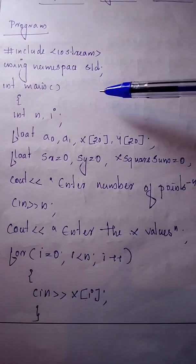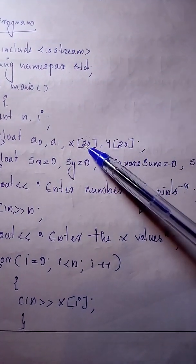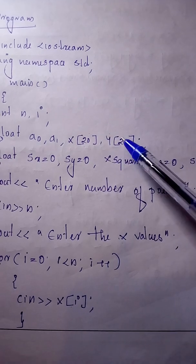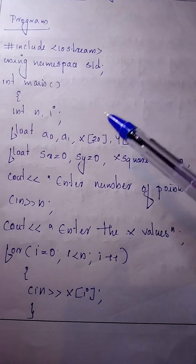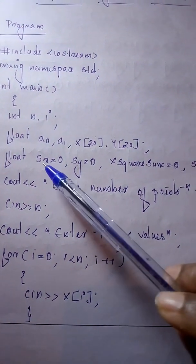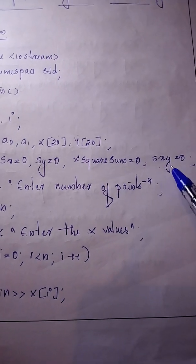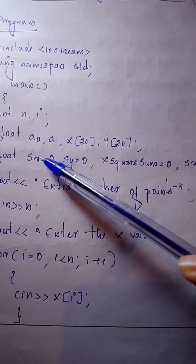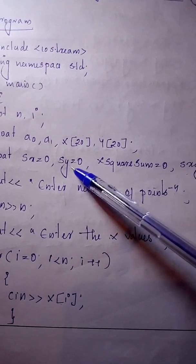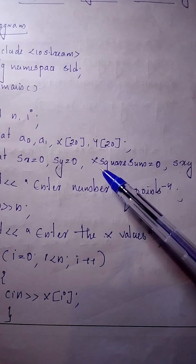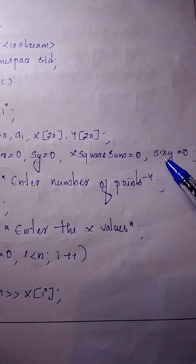In the program, we declare the following variables: x array is used for storing x values, y array is used for storing y values. We also have sx, sy, sx square sum, and sxy — where sx is used for sigma x, sy for sigma y, sx square sum for sigma x square, and sxy for sigma xy.